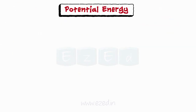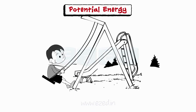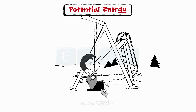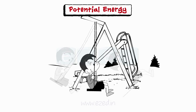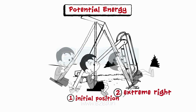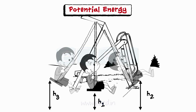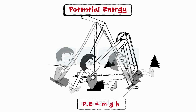A boy on a park swing is at the initial position. As he applies a force, the boy starts swinging. In his motion, potential energy is present at three points: one at the initial position, second at extreme right, and third at extreme left. Potential energy is the energy possessed by the particle by virtue of its position with respect to the ground. Potential energy means body at rest, and it is given by Mgh.